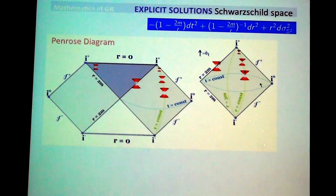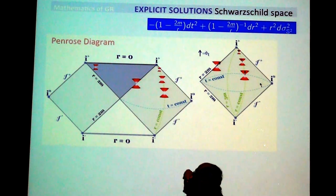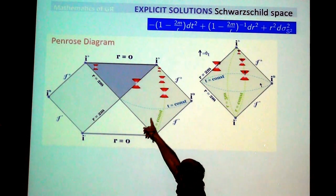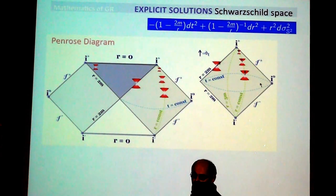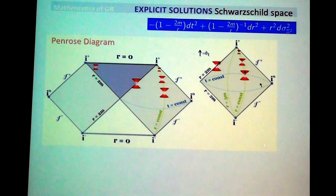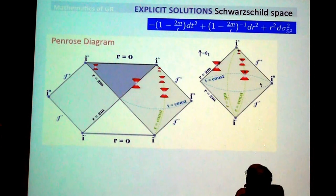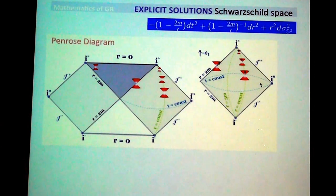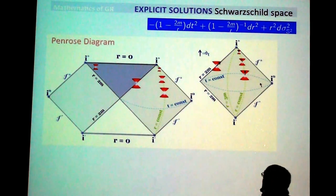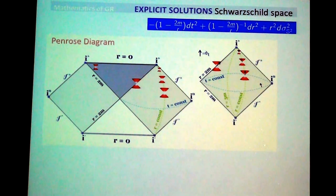The Penrose diagram of the Schwarzschild space adds boundaries at infinity. You see scri-plus, scri-minus, and the black hole region. The light signals from any point inside the black hole will never escape — that's why it's called a black hole. The external part of the Schwarzschild solution corresponds to one exterior region. The singularity r equals 0 is a true singularity, and r equals 2m is the event horizon.